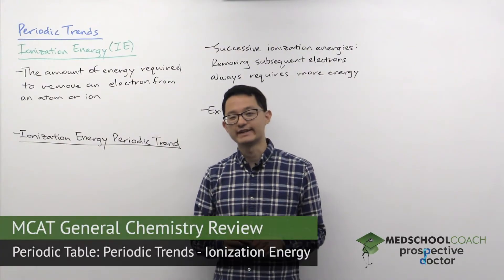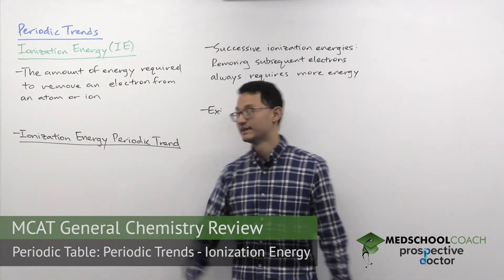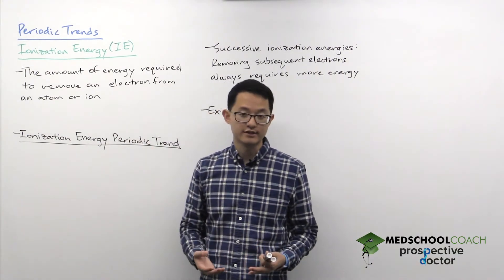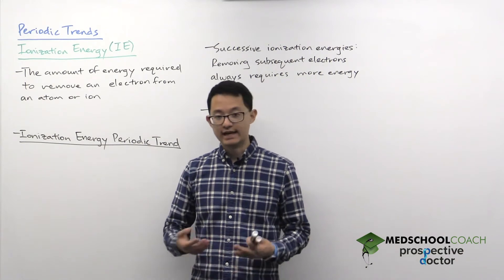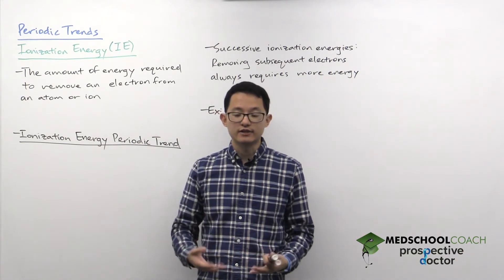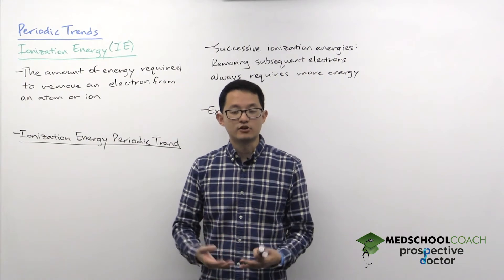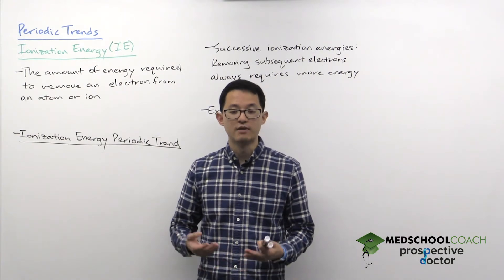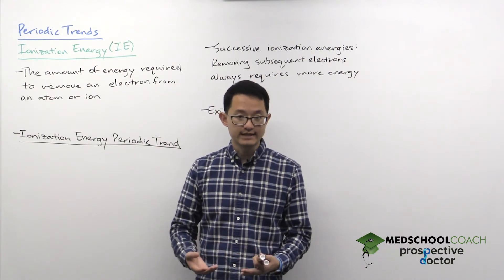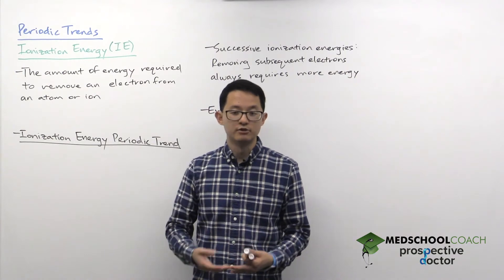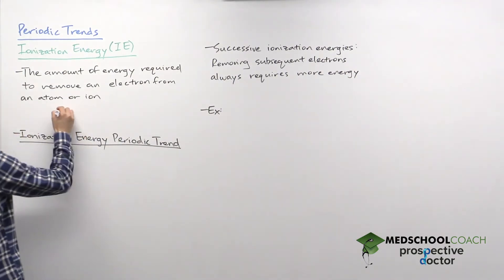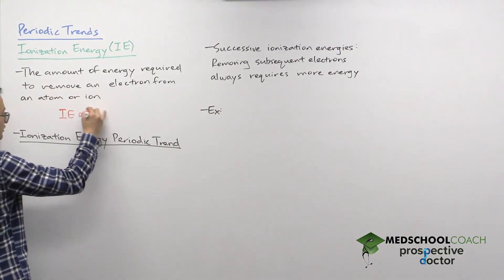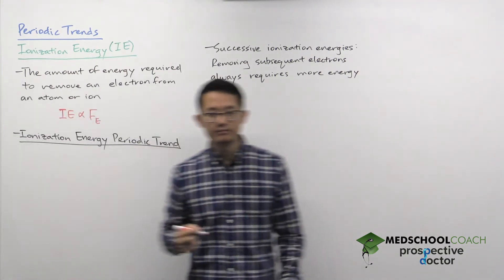Our next trend is going to be looking at ionization energy. Ionization energy is defined as the amount of energy required to remove an electron from an atom or an ion. To figure out this periodic trend, let's think about the electrostatic force. If you have a stronger electrostatic force, the nucleus is holding on to its valence electrons more tightly, so you need more energy to remove electrons — meaning the electrostatic force is directly proportional to the ionization energy.